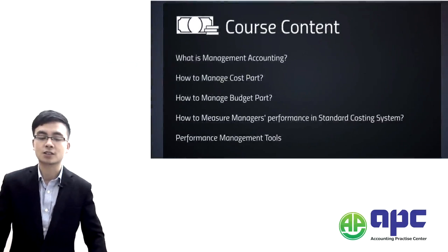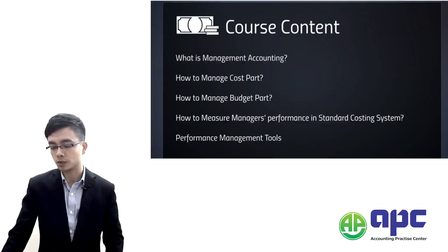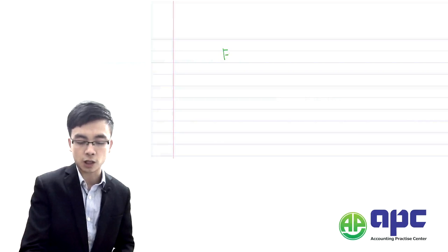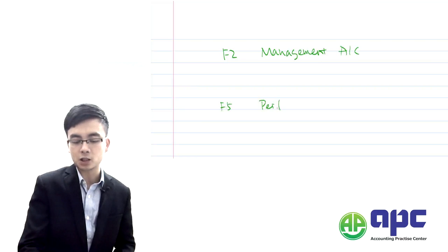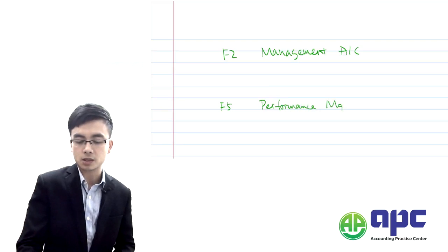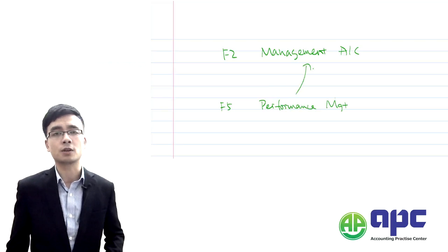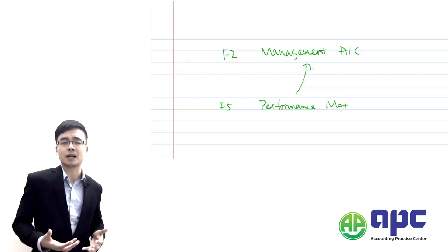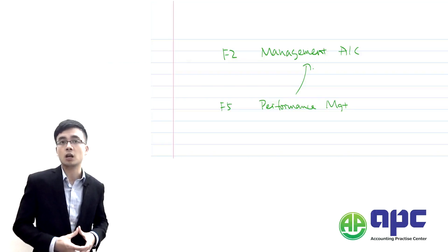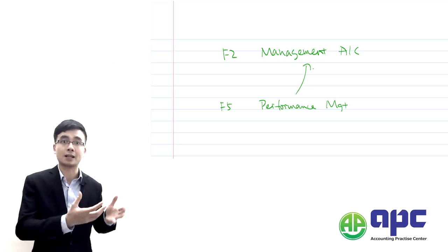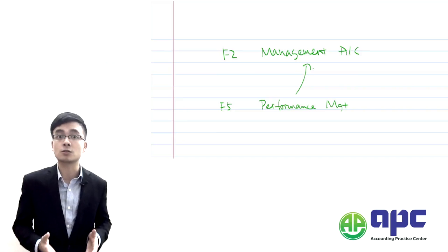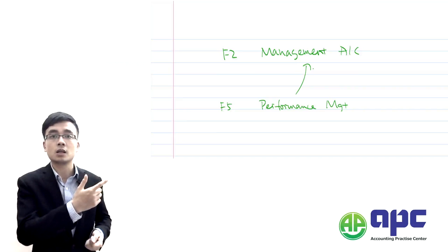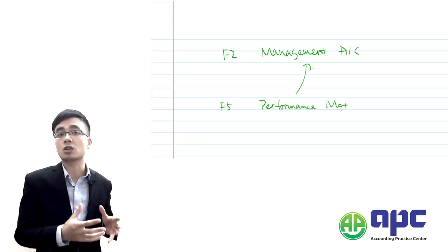The syllabus of F5 is called Performance Management. It is based upon the knowledge you've learned in ACCA paper F2, Management Accounting, but builds upon those concepts. In Management Accounting, the Management Accountant is required to present useful information to management — to help them with planning, making decisions, and controlling the business.